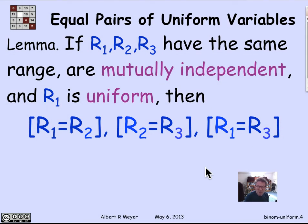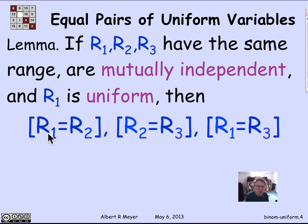Let's prove a little lemma that will be of use later — just some practice with uniformity. Suppose R1, R2, R3 are three mutually independent random variables, and R1 is uniform. We assume the other two only take values that R1 can also take. Then the claim is that each of the pairs — the event that R1 equals R2, the event that R2 equals R3, and the event that R1 equals R3 — are pairwise independent of each other.